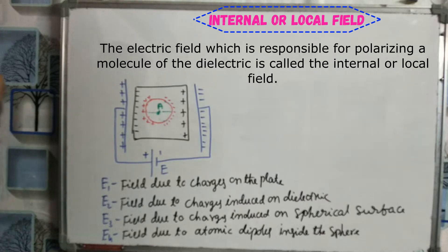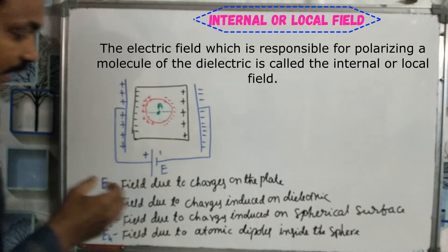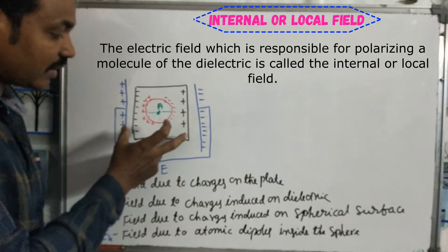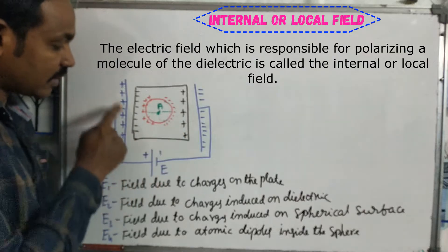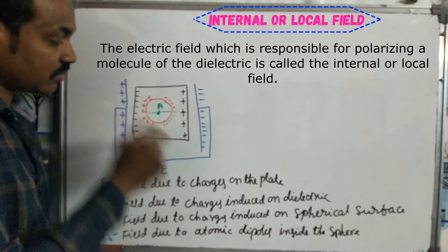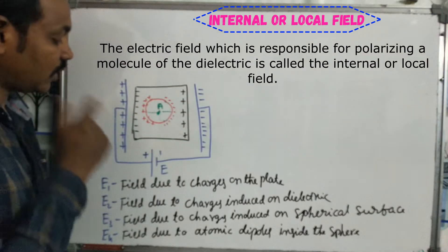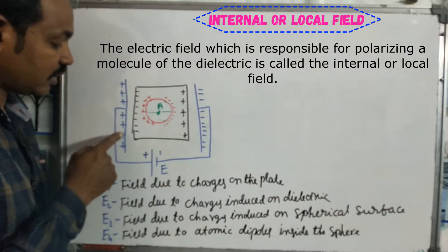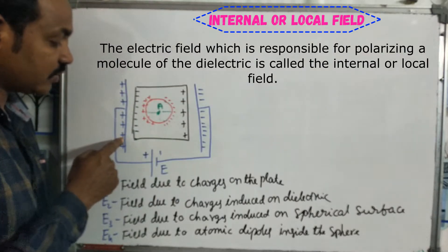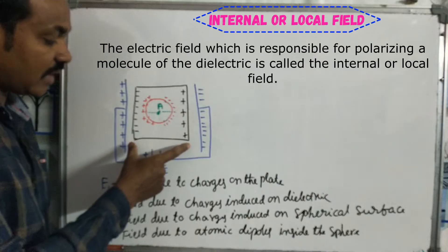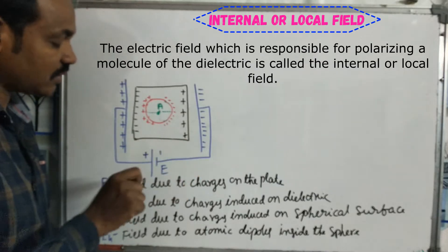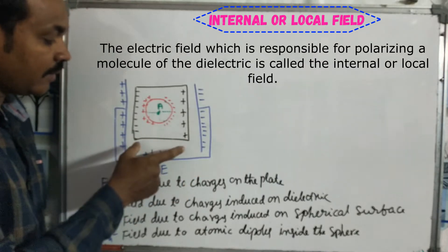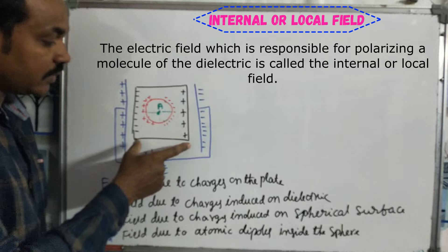Now, we have a dielectric material in the capacitor. The capacitor has two electrodes — one metal plate and one non-metallic material. Dielectric material is non-metallic material.